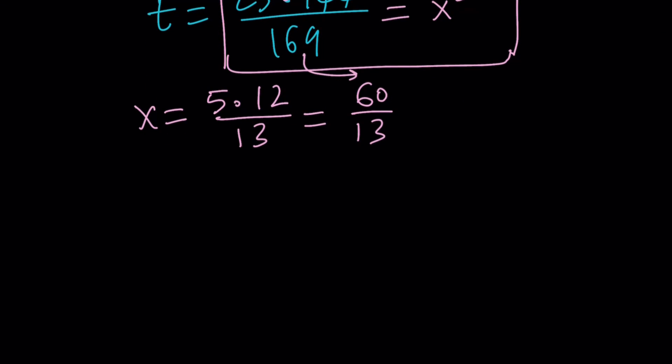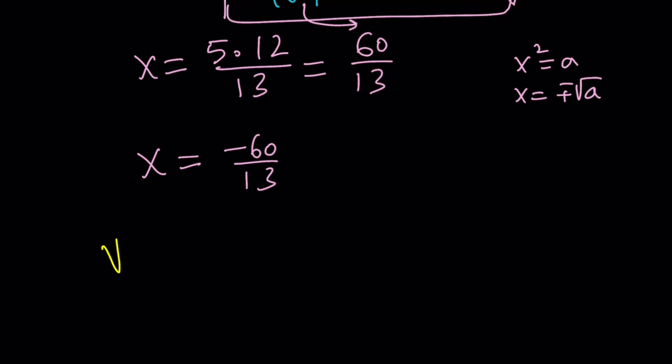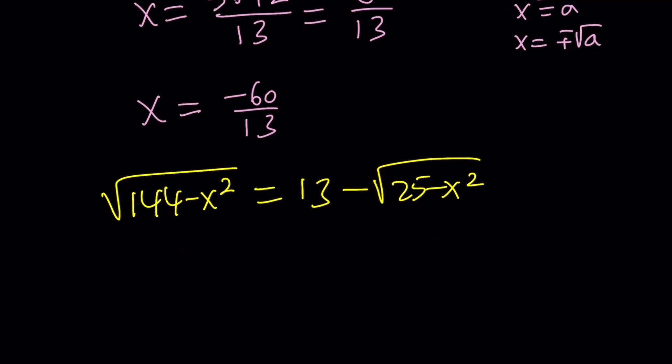Now remember, t is x squared. So we can now replace t with x squared. Back substitute, set it equal to x squared. Obviously, we didn't say anything about x being positive or negative, so we have to consider both solutions. And in this case, if you square root both sides, you can square root every number here.